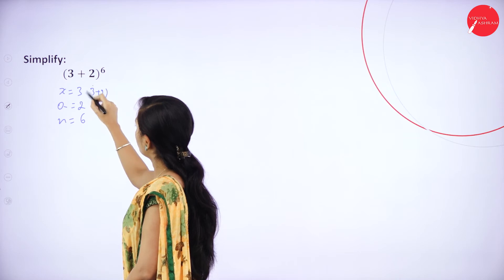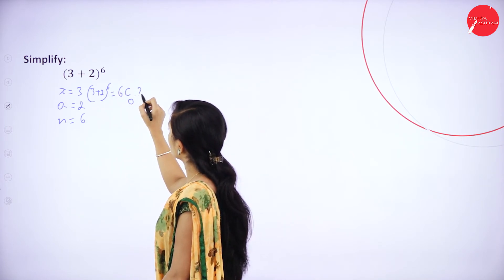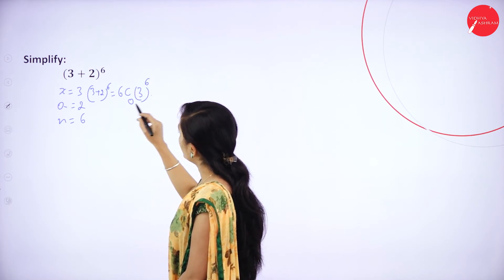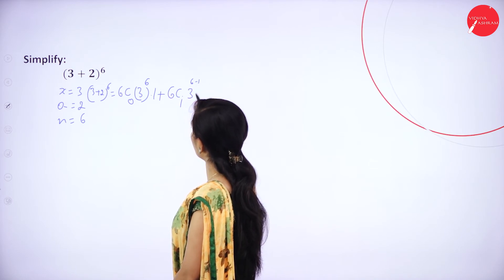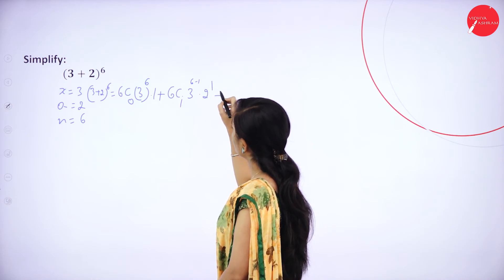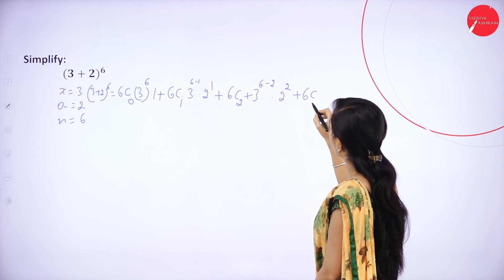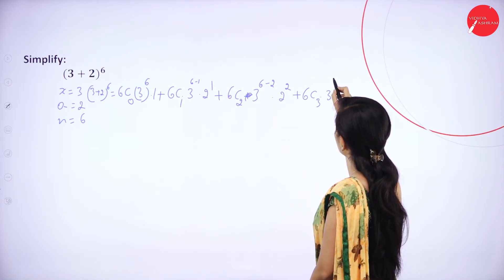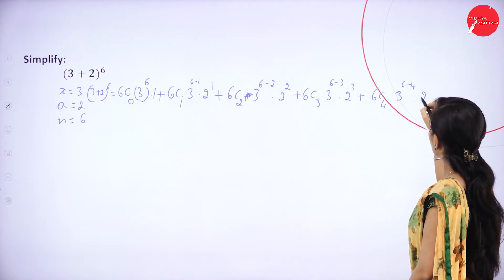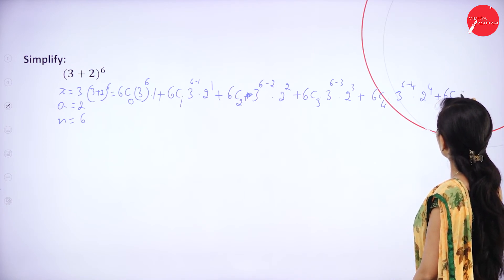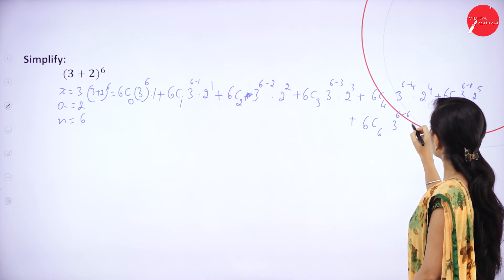3 plus 2 whole power 6 equals 6c0, since n value is 6 and x value is 3 power 6 minus 0 (which is 6), into 2 power 0. 2 power 0 is 1, plus 6c1 3 power 5 into 2 power 1, plus 6c2 3 power 4 into 2 power 2, plus 6c3 3 power 3 into 2 power 3, plus 6c4 3 power 2 into 2 power 4, plus 6c5 3 power 1 into 2 power 5, plus 6c6 3 power 0 into 2 power 6.